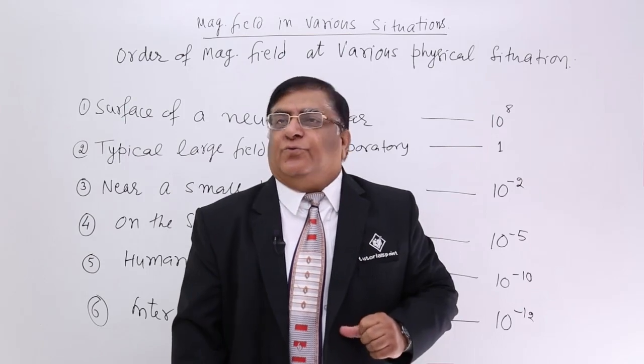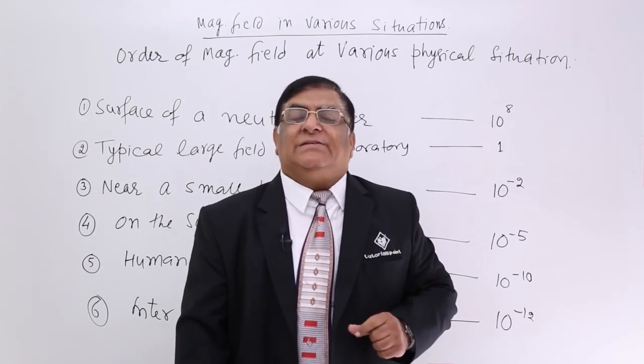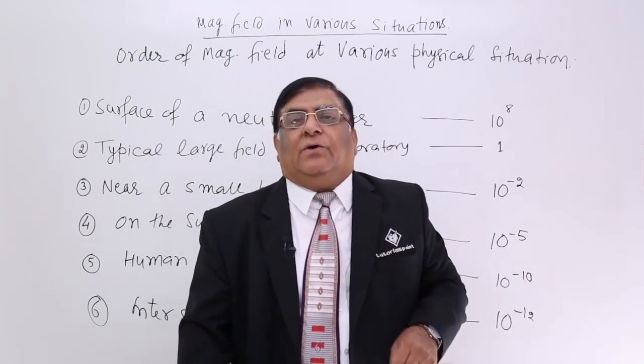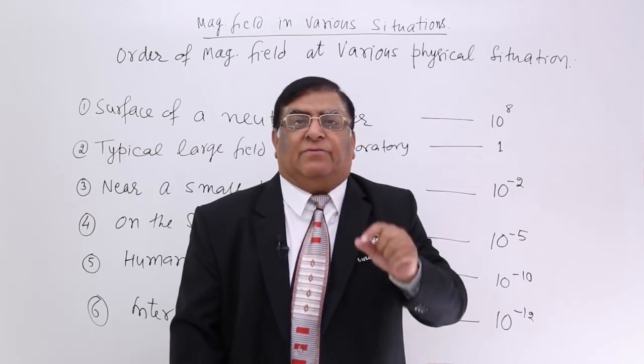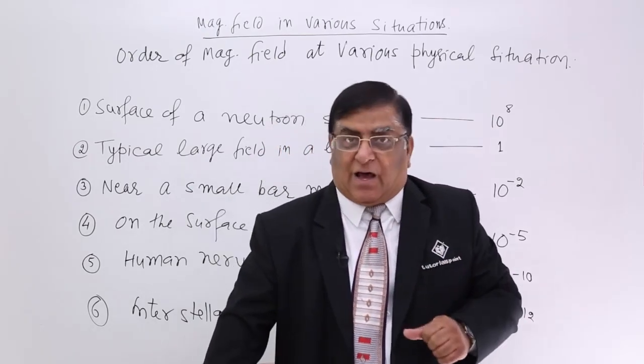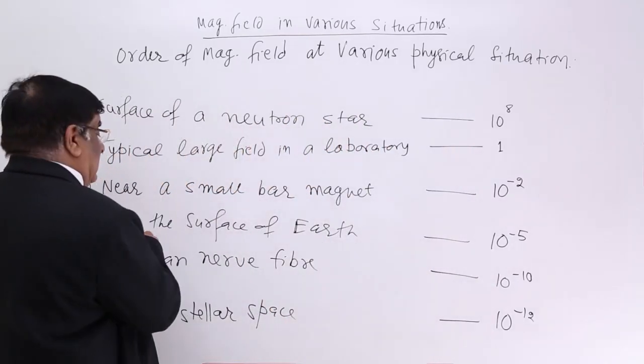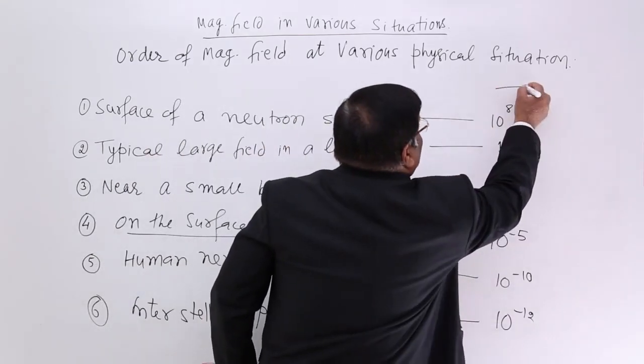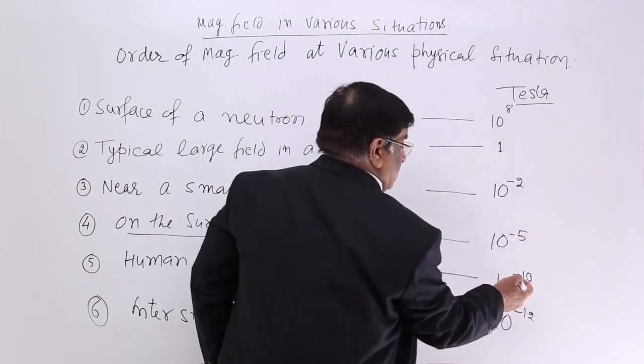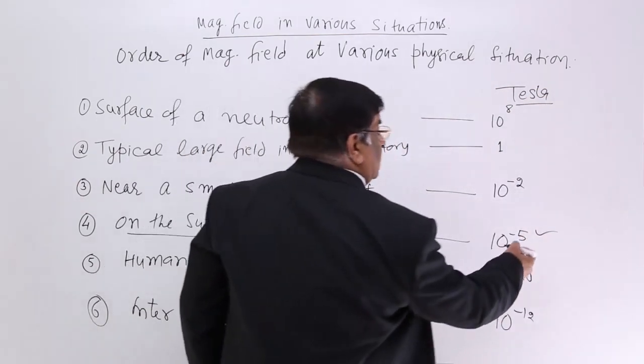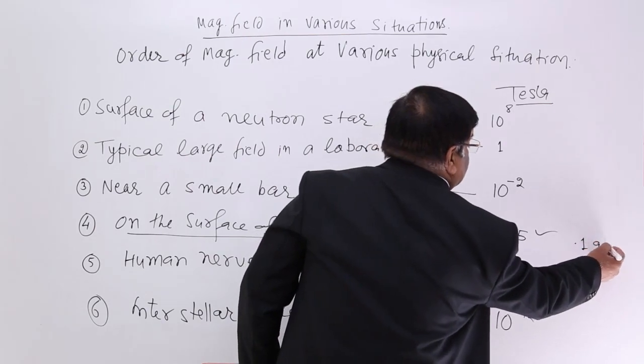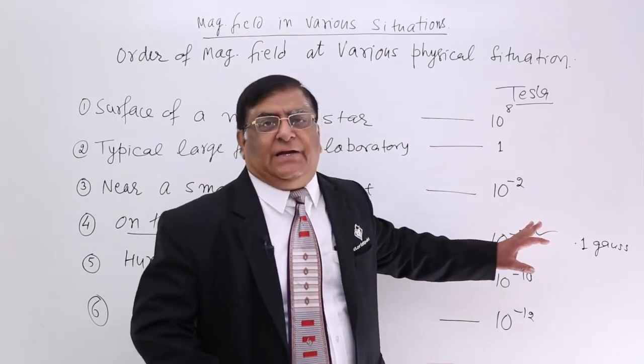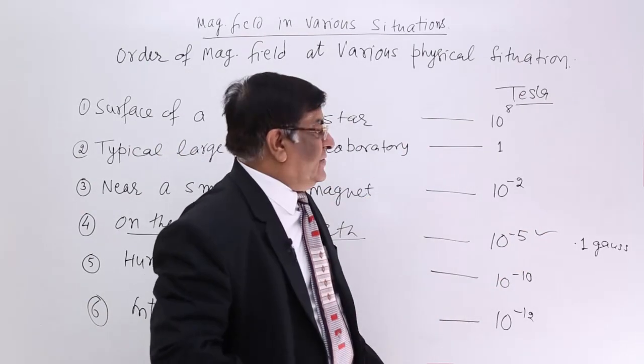Then do we have this magnetic field around us? What is the magnetic field around us? That magnetic field is due to Earth. Now if we compare this magnetic field with our given unit, that is tesla, then you will find that on the surface of Earth it is 10 to the power minus 5 tesla. That is almost 0.1 gauss in CGS system. It may be a little less or a little more from location to location.